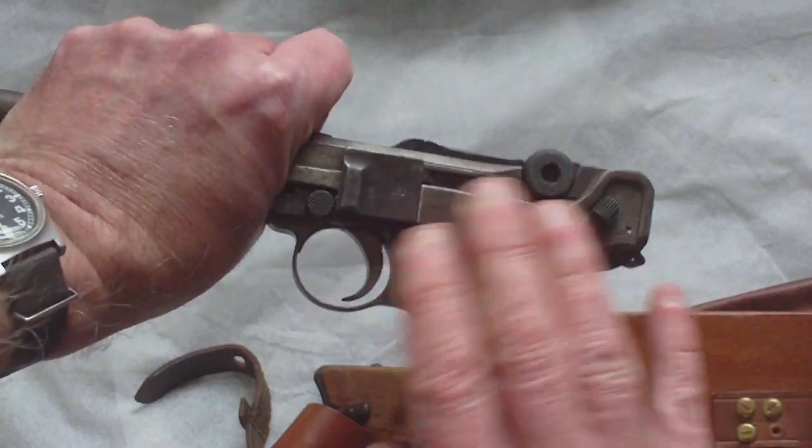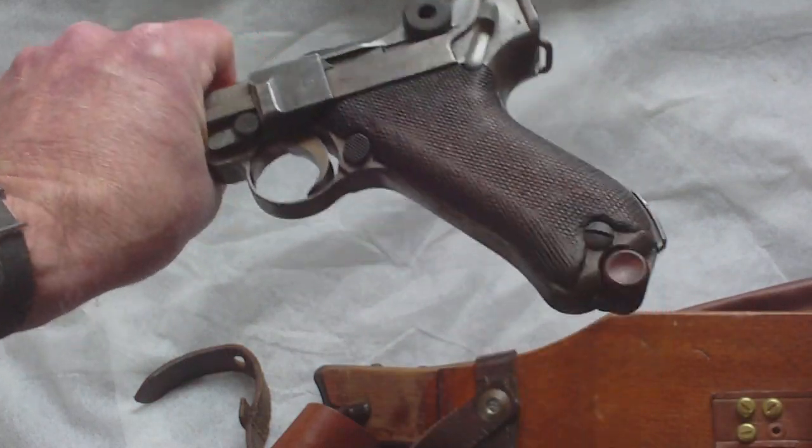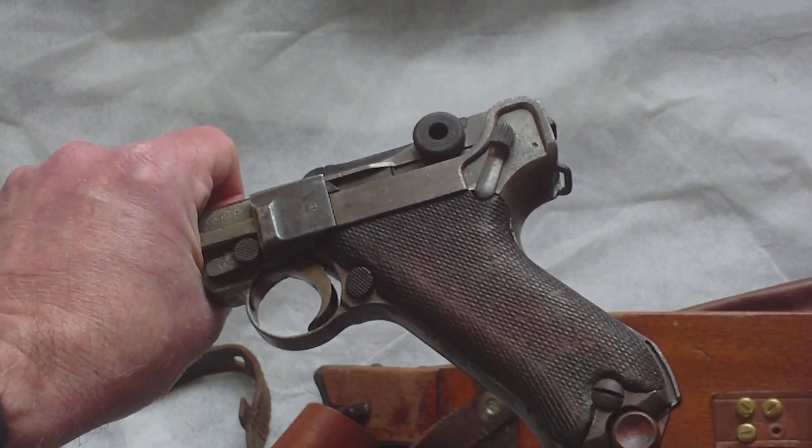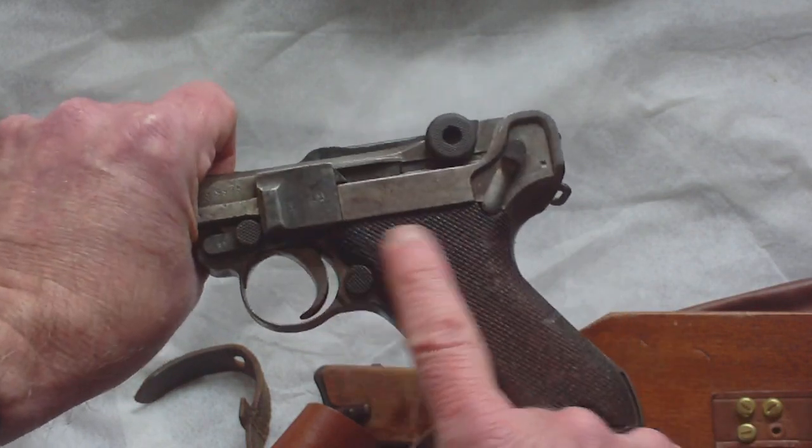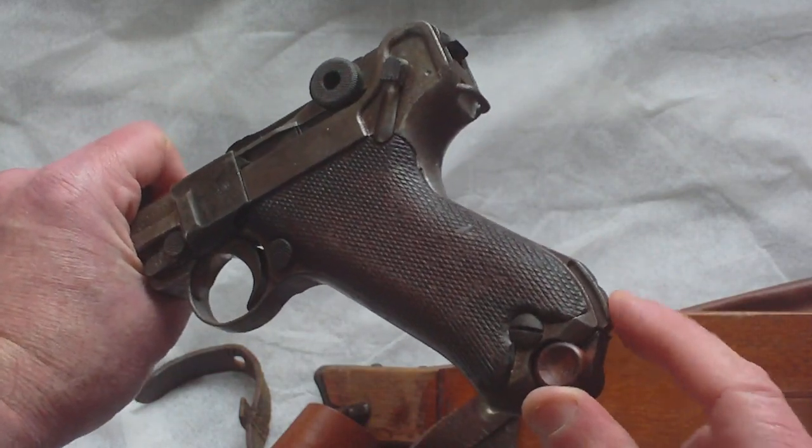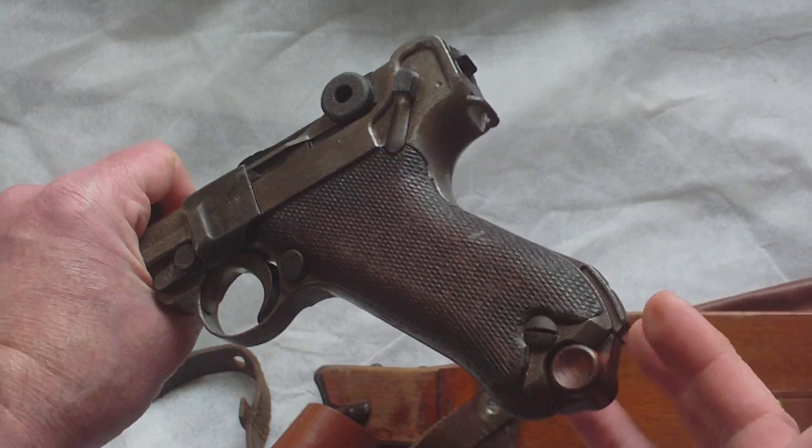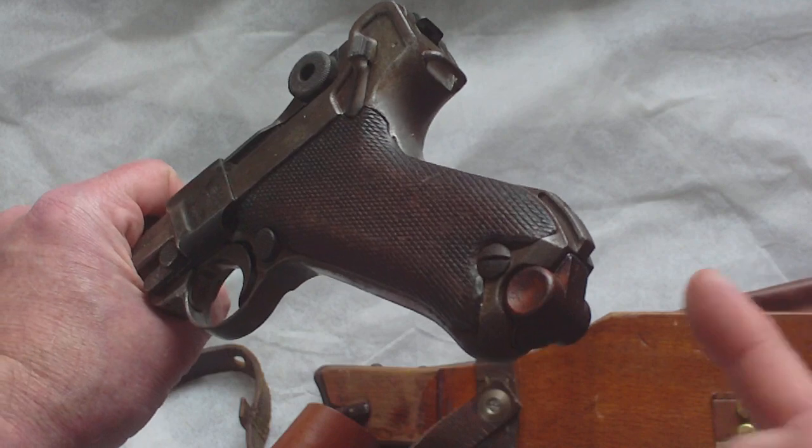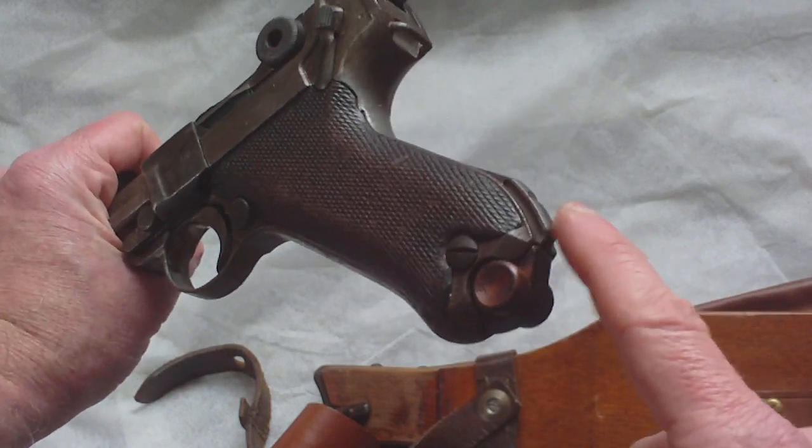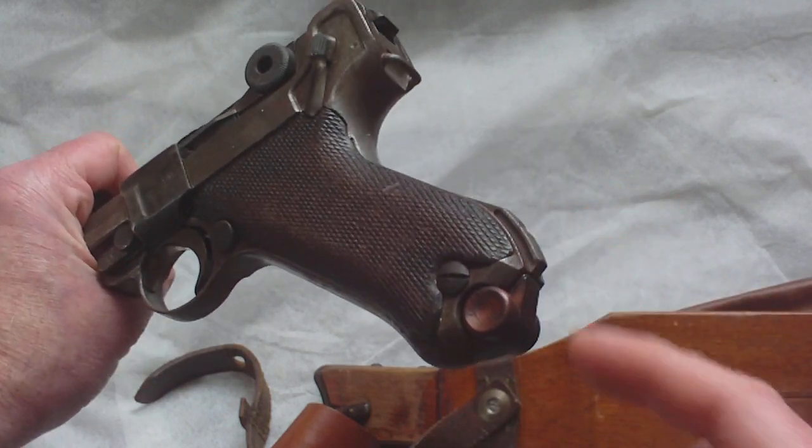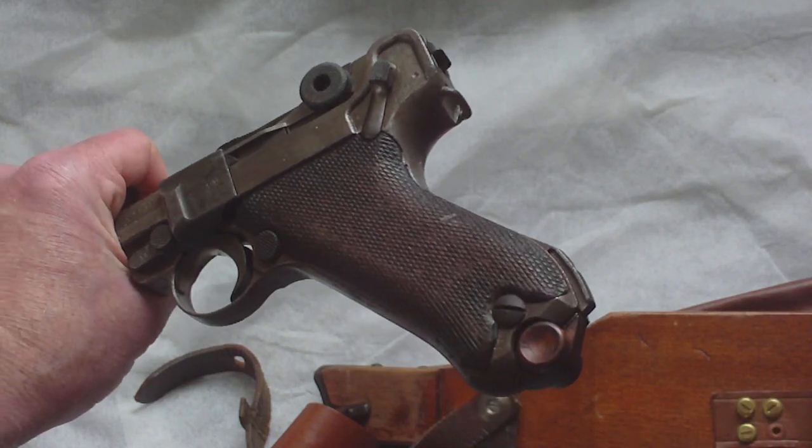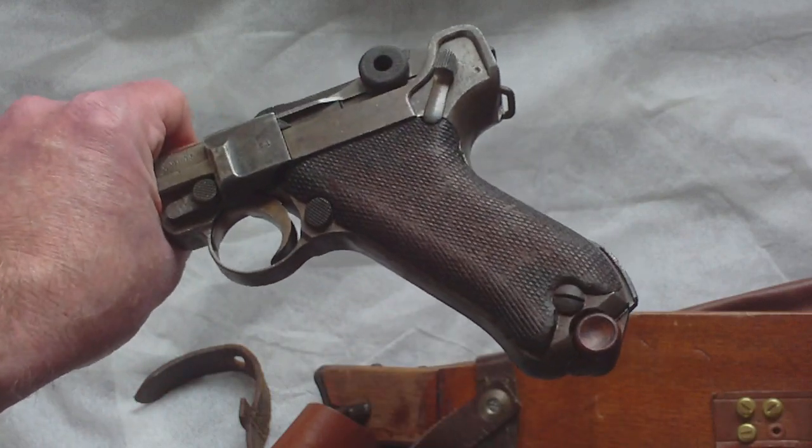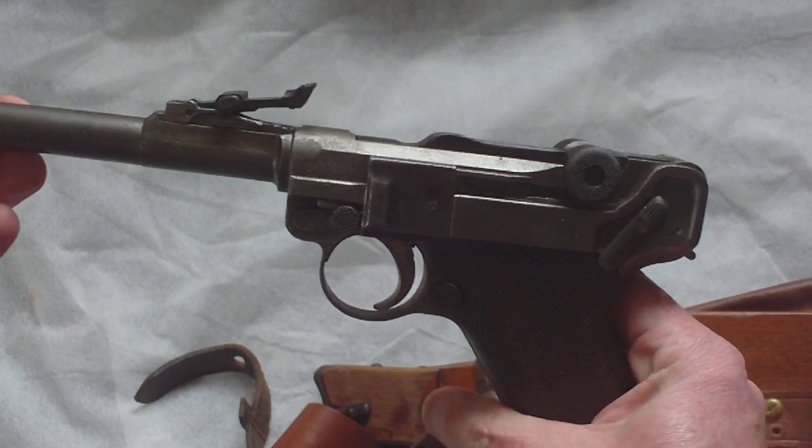So from there backwards it's a standard P08. In fact, when DWM stopped making artillery Lugers and went over to four-inch Lugers, they continued making this part of the gun with the board stock attachment because they couldn't be bothered redesigning the machinery. So it is quite possible that you'll have a four-inch barrel Luger that isn't an artillery Luger with the board stock attachment on it. That doesn't mean it was meant to be attached to a board stock. It just means DWM continued production of that to make regular Lugers.